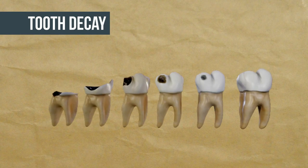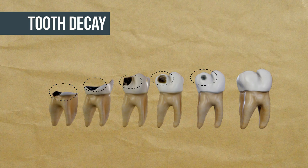Tooth decay occurs when teeth are not cleaned properly. They gather germs which form a sticky layer on them. These germs eat up the teeth, and this results in tooth decay.